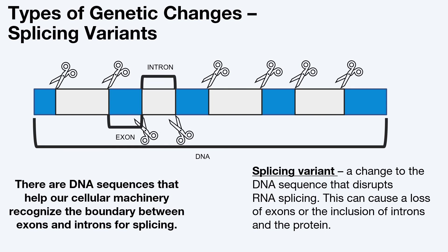Some genetic variants can affect the splice sites that allow our cells to recognize the introns and remove them before creating a protein. A variant at a splice site, or that affects splicing, might be called a splice site variant. Variants that affect splicing can result in the loss of exons or the inclusion of introns. The loss of exons or inclusion of typically non-coding introns can change the protein that is made.